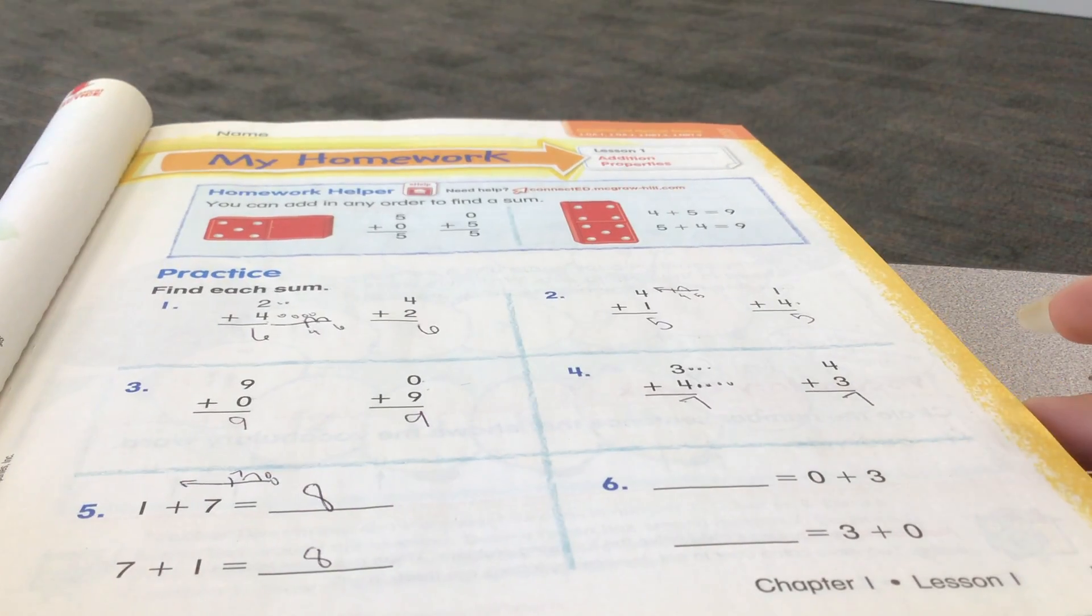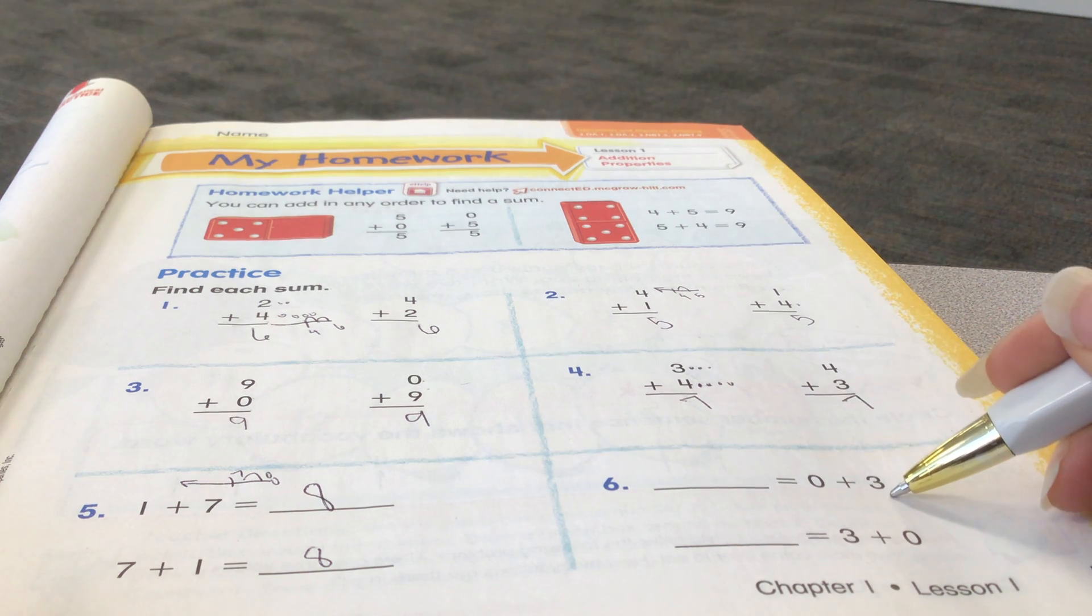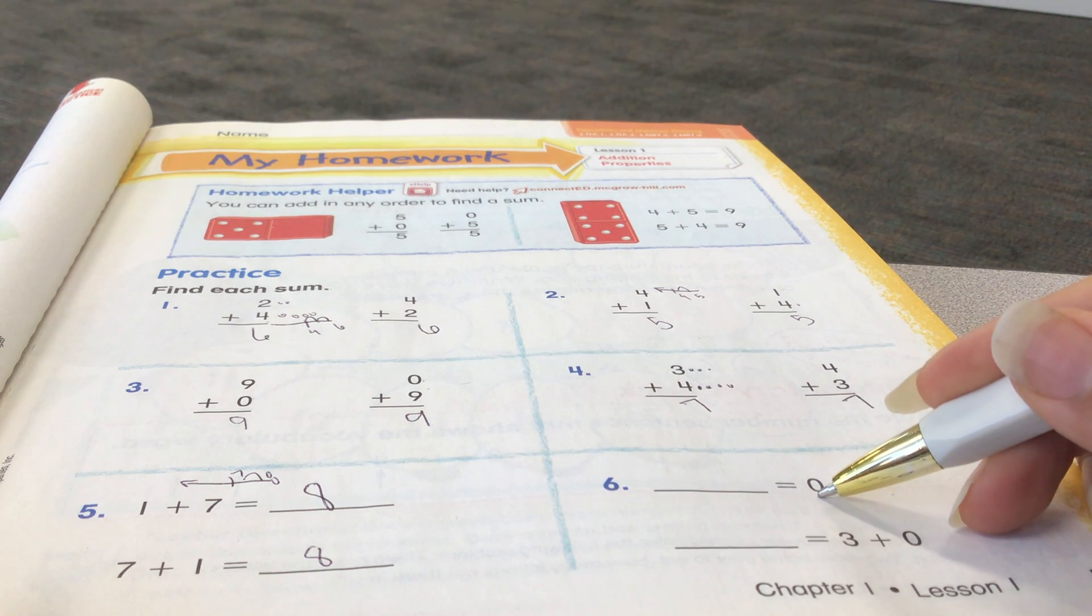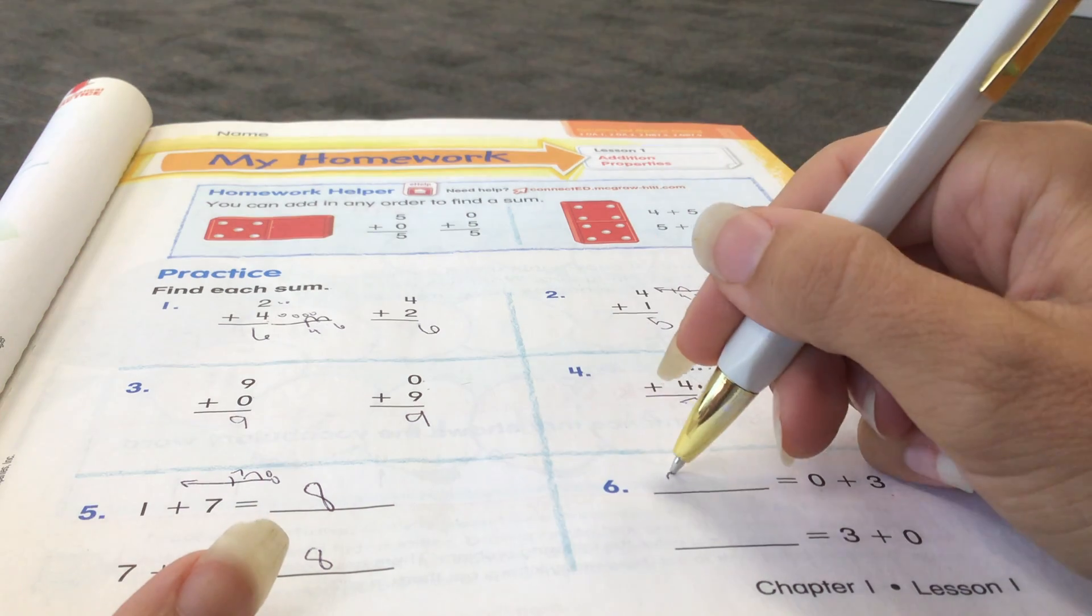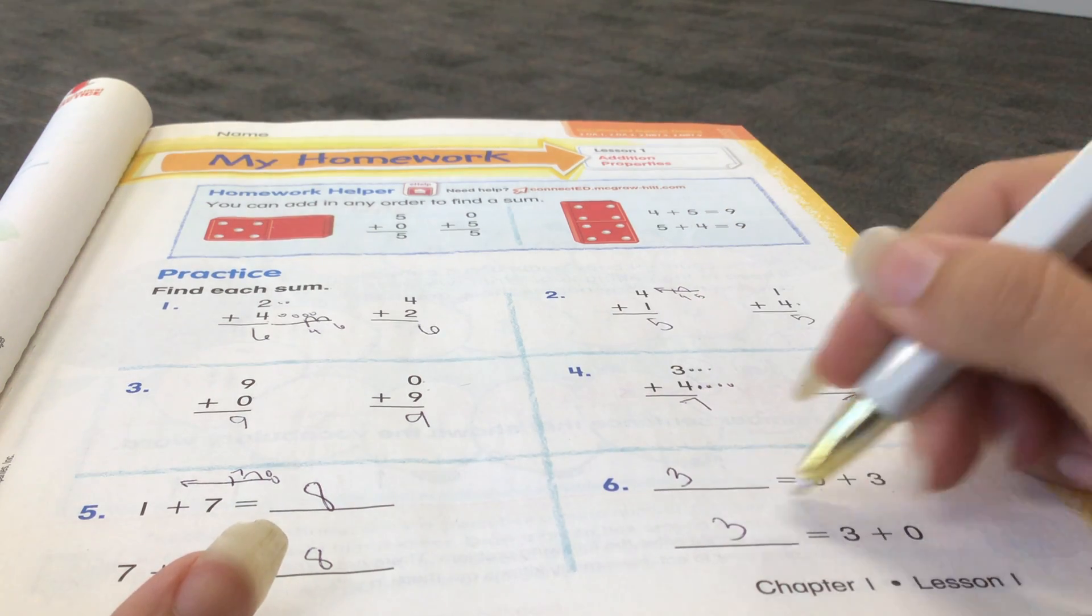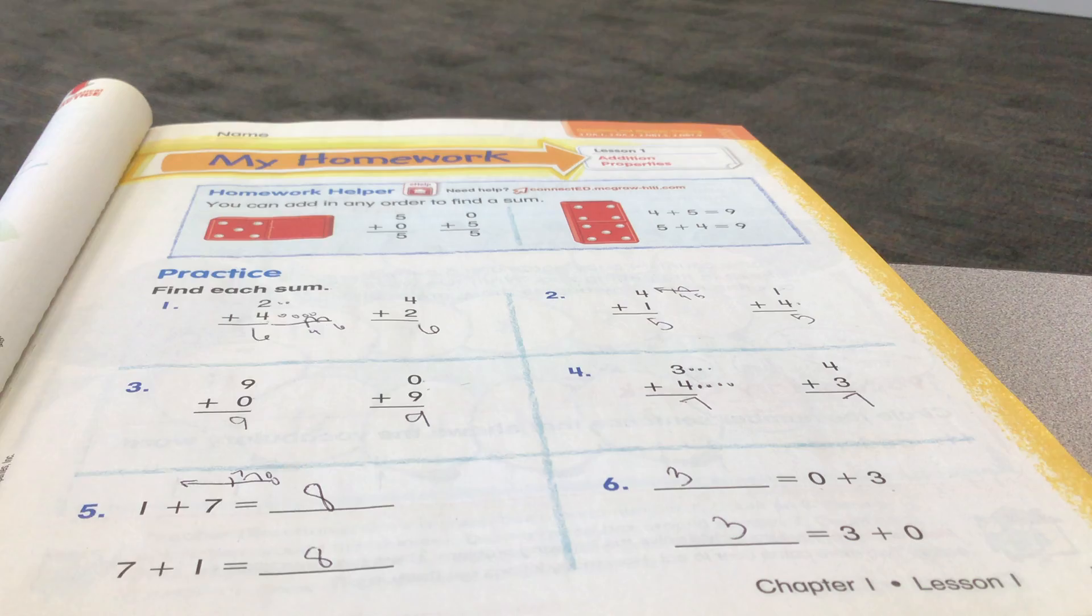0 plus 3, 3 plus 0. We're going to start with the larger number. And there's nothing there. So it's that identity property. The answer would be 3. See how they flip that around? They just put the answer at the beginning. Math, you can do that. It's an equation.